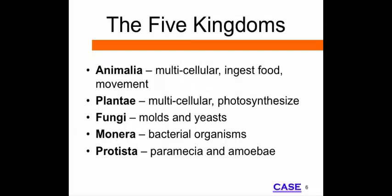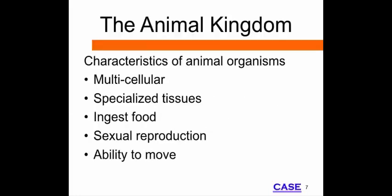In addition to plants and animals, other kingdoms make a distinction amongst microscopic and single-celled species. Some scientific groups define six kingdoms where monera is divided into archaebacteria and eubacteria. Characteristics of organisms in the animal kingdom include multicellular organisms with specialized tissues. Nearly all animals ingest their food and reproduce sexually. The final characteristic is the ability to move.